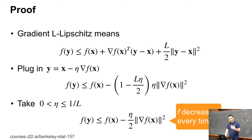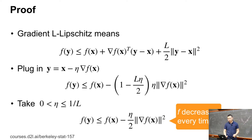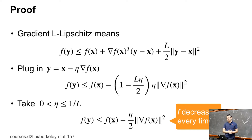Now let's do the proof of this convergence rate — the last and most complex proof of the class. This is the enjoyable part of convex optimization: you can actually prove things. It's pretty short, just three slides. By the L-Lipschitz assumption, given any y, we have an inequality with three terms. The first two terms form the first-order approximation of the function, and the last one is an additional quadratic term.